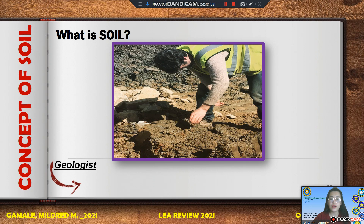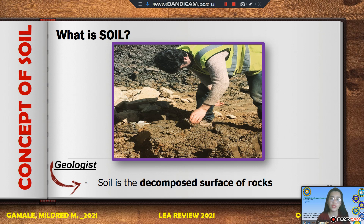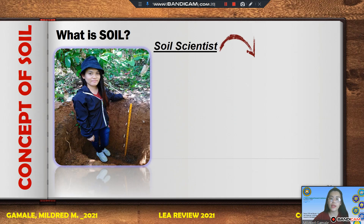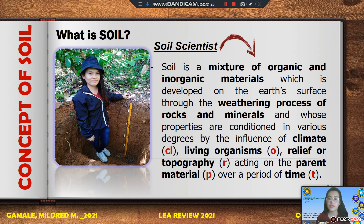Geologists study the origin of the earth as to its history, nature, processes, and materials. According to them, soil is the decomposed surface of rocks — they believe soil comes from or started out from the weathering of rocks. Formally, soil is a mixture of organic and inorganic materials developed on the earth's surface through the weathering process of rocks and minerals, whose properties are conditioned by climate, living organisms, relief or topography, acting on the parent material over a period of time. These five factors of soil formation are abbreviated as CLORPED, which we will discuss later.